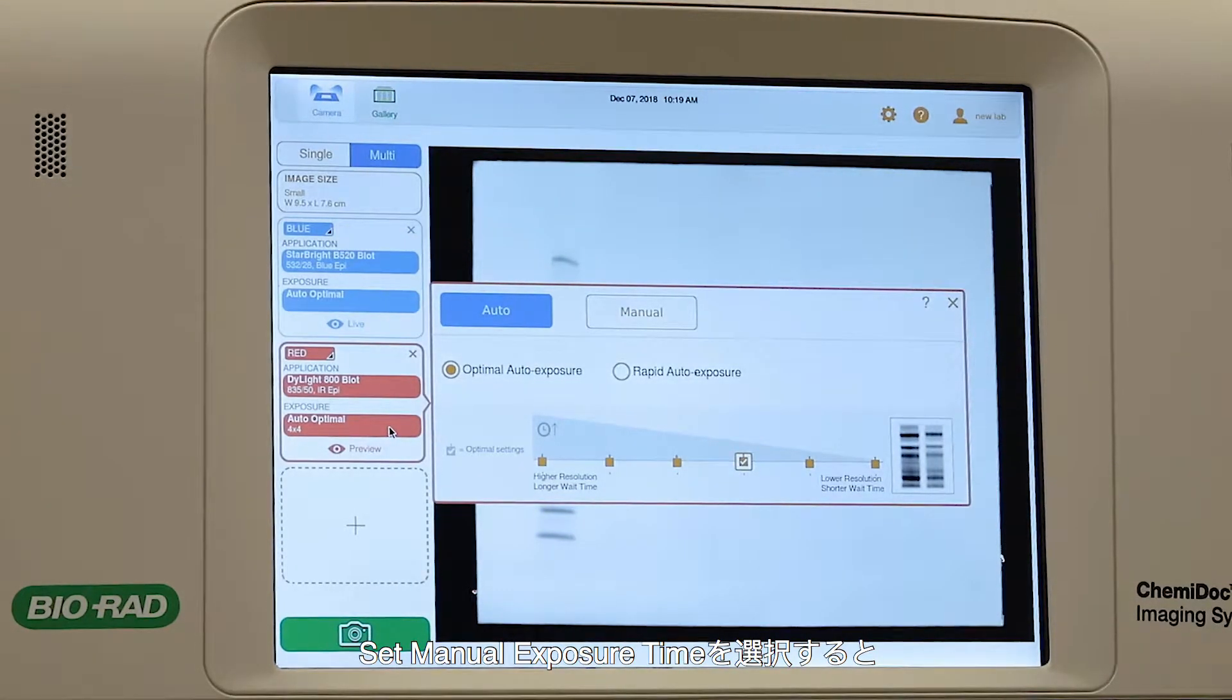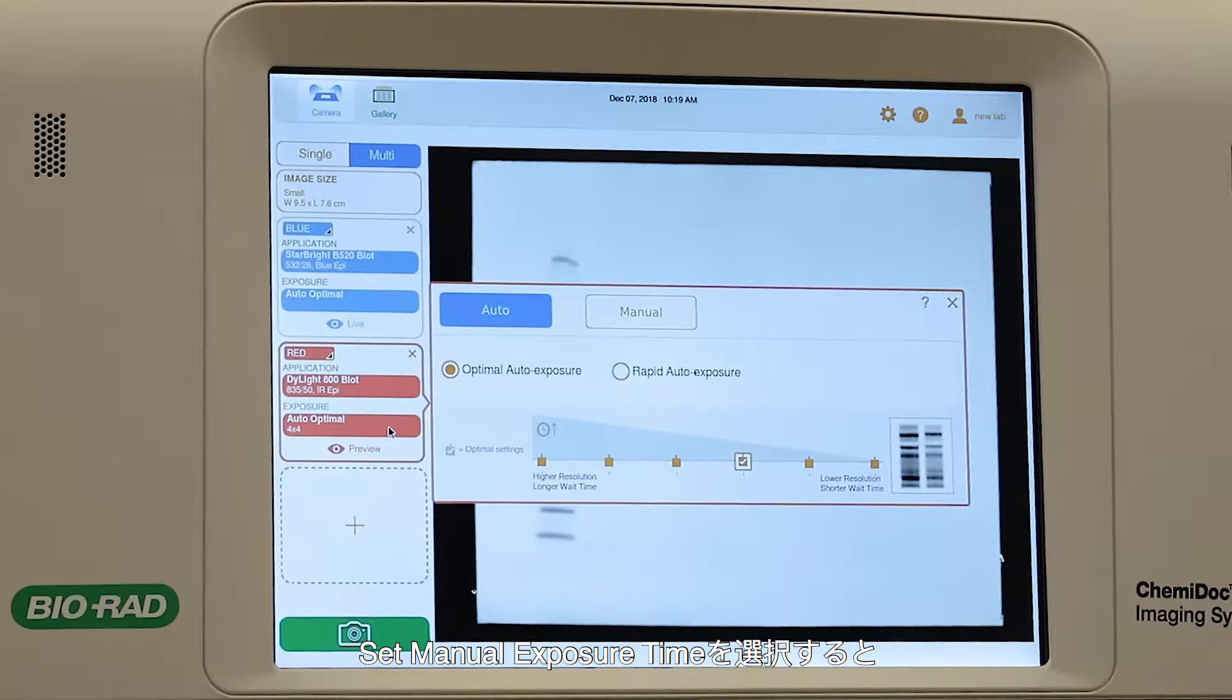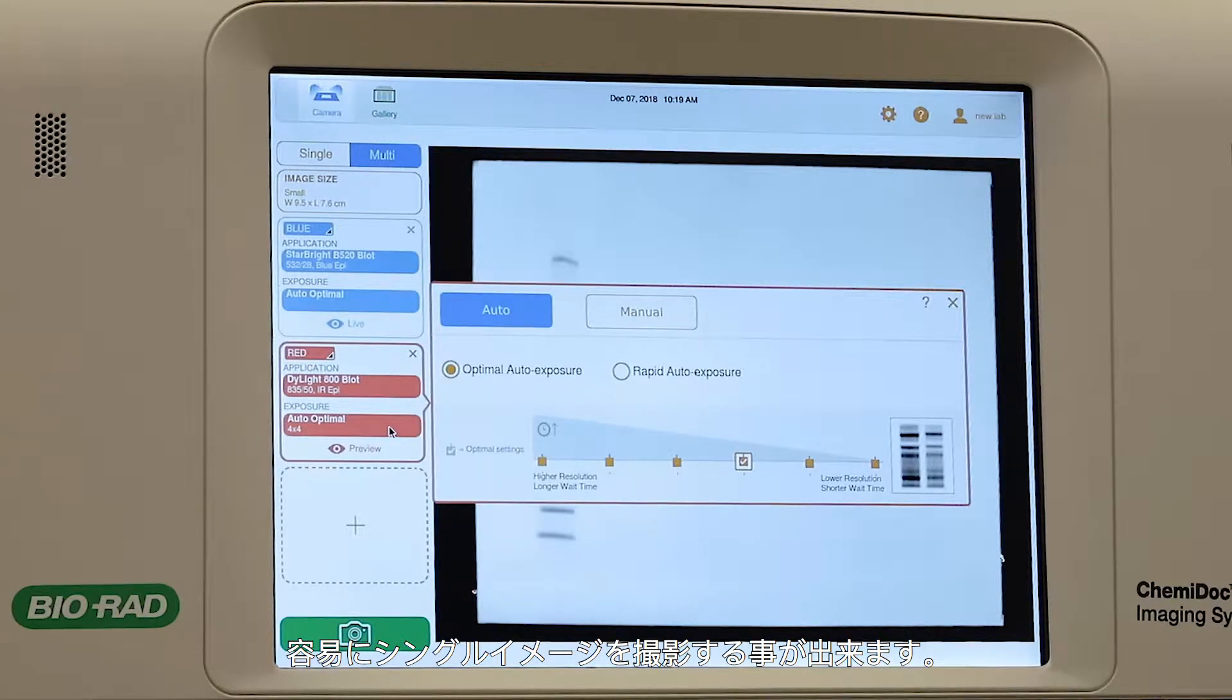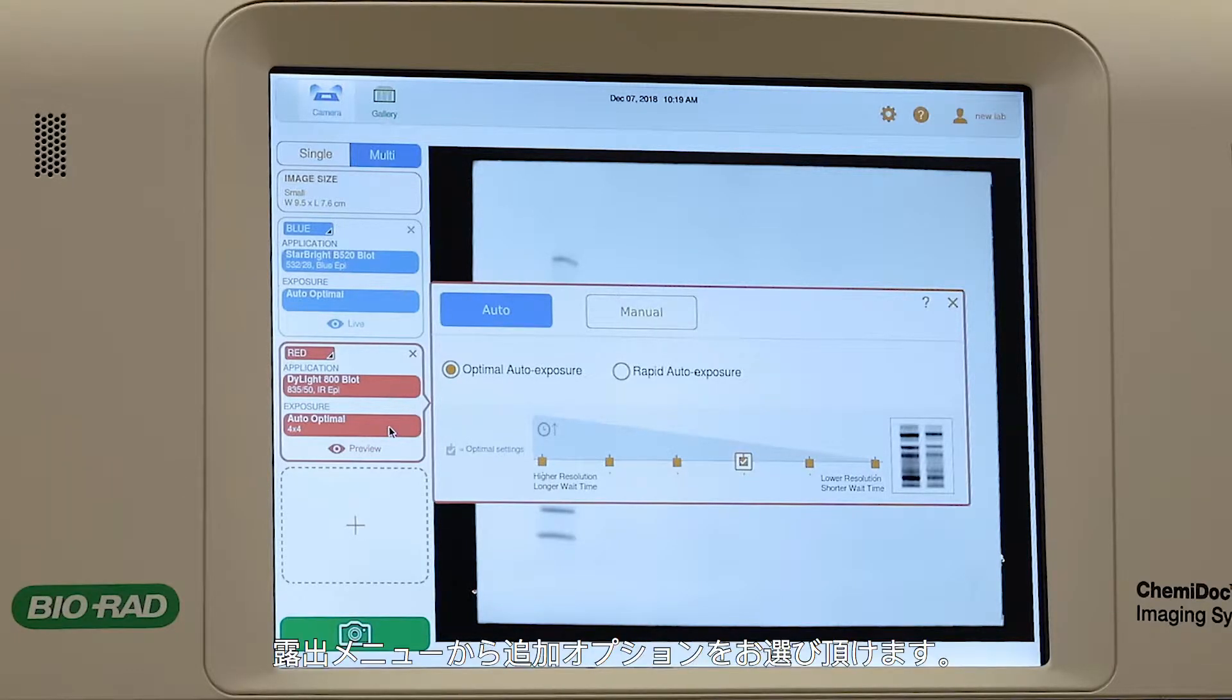If you prefer, you can easily capture a single image by selecting Set Manual Exposure Time. To accommodate low-light quantitative assays, such as near-infrared dyes, additional options are available in the Exposure menu.